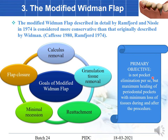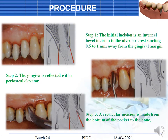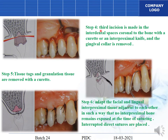The primary objective of the modified Widman flap is not pocket elimination per se, but maximum healing of the periodontal pocket with minimum loss of tissue. The initial incision is placed 0.5 to 1 mm away from the gingival margin directed towards the tooth. After the incision is placed, the flap is elevated away from the bone. Then the crevicular incision — the second incision — is placed through the gingival sulcus.